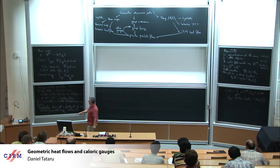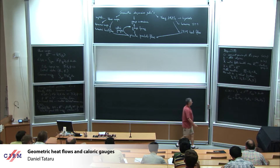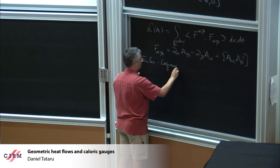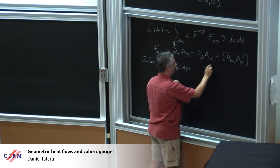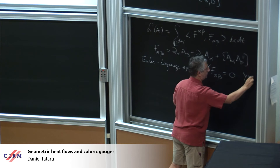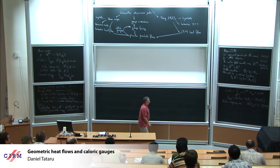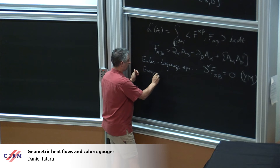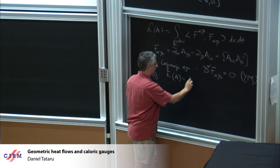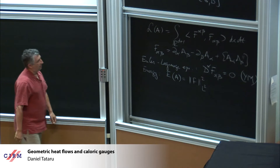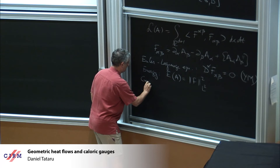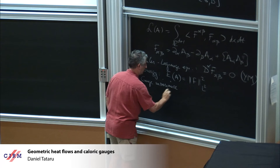The curvature of the connection plays the same role as the derivatives of the map. If you look at the Euler-Lagrange equation here, it will have the form D_alpha F_{alpha beta} = 0. This is what I'll refer to as the hyperbolic Yang-Mills equation. Two important features: one is that you have an energy — the energy of A is the L^2 norm of its curvature squared. The second feature, which leads me to the main part of my story, is that you have a gauge invariance.